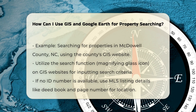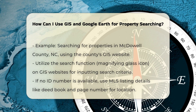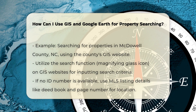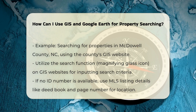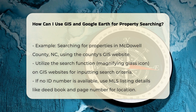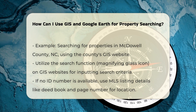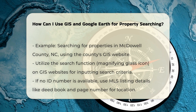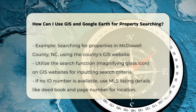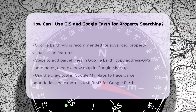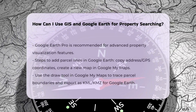Using Google Earth for property search. Google Earth is a powerful tool for visualizing properties. To use it, you can start by downloading Google Earth Pro, which offers advanced features such as importing and exporting GIS data and accessing high-resolution historical satellite imagery.